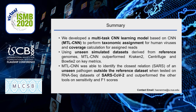In summary, MTL-CNN was developed to perform taxonomic assignment for human viruses and coverage calculation for assigned reads. This model outperformed Kraken-2, Centrifuge, and Bowtie2 on key metrics using unseen simulated datasets. And this model was able to identify the closest relation, which is SARS, of an unseen pathogen outside the reference dataset when tested on four RNA sequencing datasets of SARS-CoV-2. This is my presentation. Thanks.